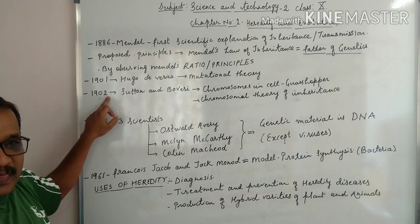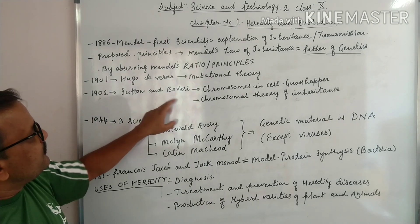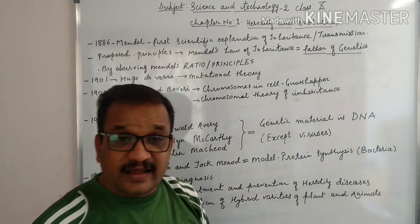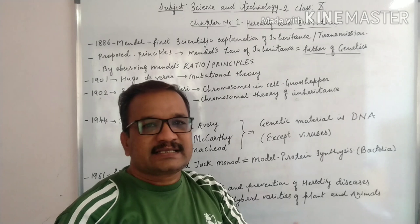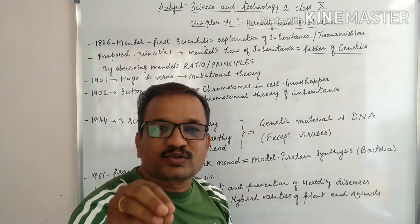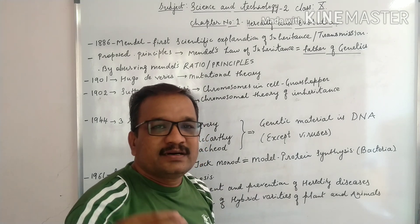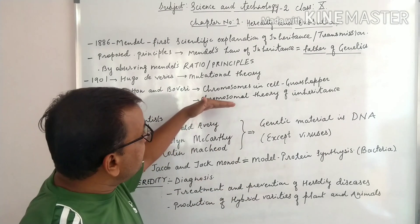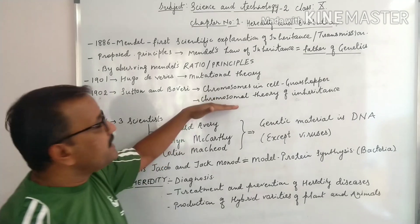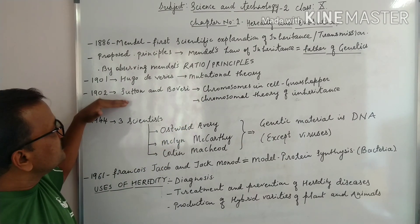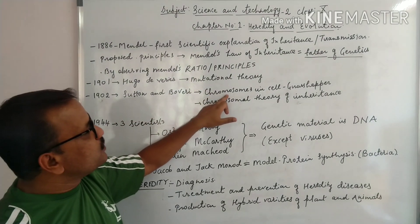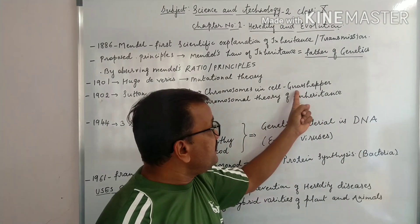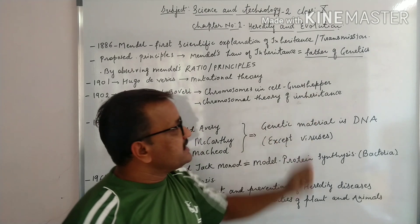In 1902, Sutton and Boveri found that chromosomes are present in the cell. Today we know that inside the chromosome, DNA is wrapped around its structure and this DNA is called the genetic material. It was not found by any other scientist before this. Sutton and Boveri studied chromosomes using a grasshopper as their model organism.